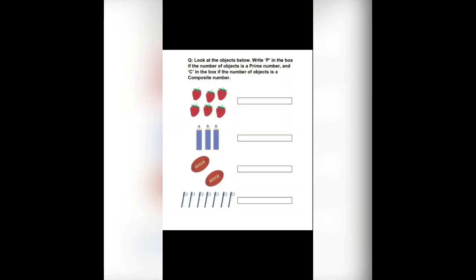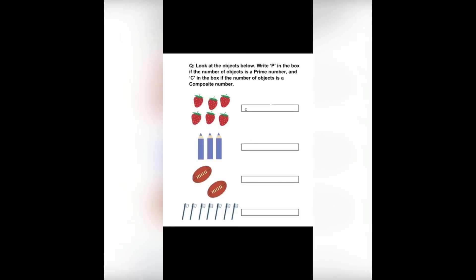Let's start practice. Look at the objects below. Write P in the box if the number of objects is a prime number, and C in the box if the number of objects is a composite number. Now count the strawberries — it's six.